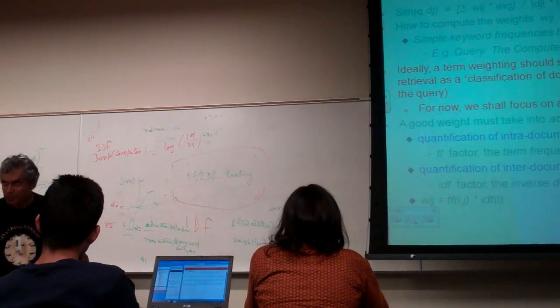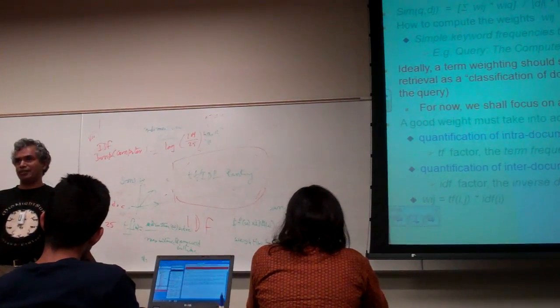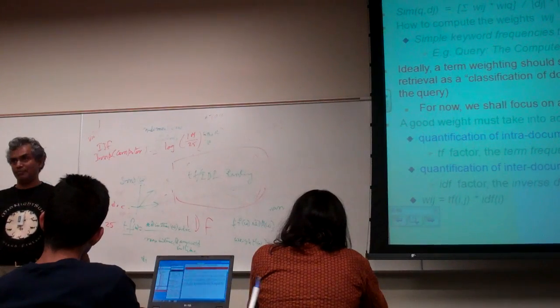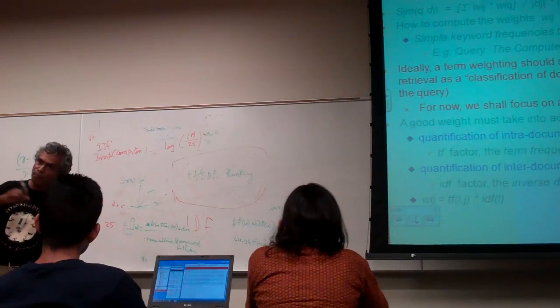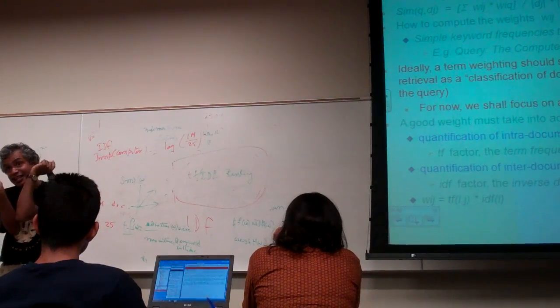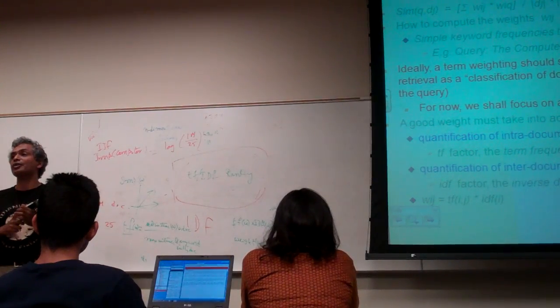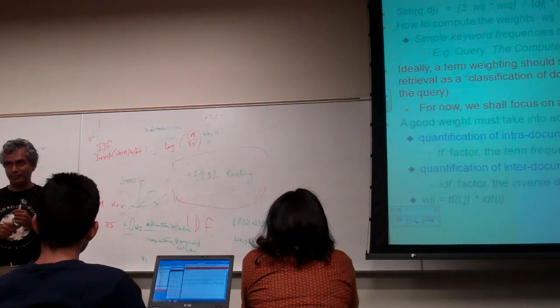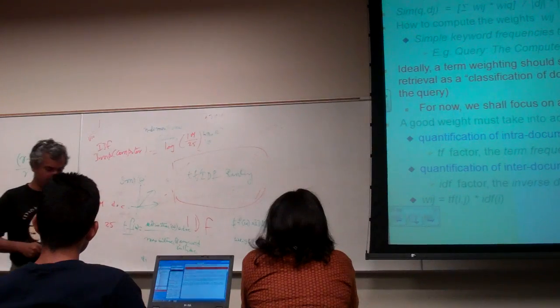If you change all weights by the same constant, you don't change the vector. Because the unit vector would be still the same. If you change one more than the other, then you are changing the direction of the vector. Then it's a different vector.